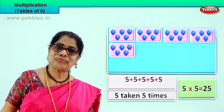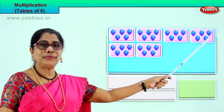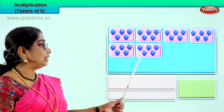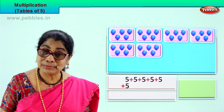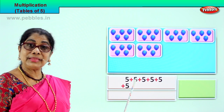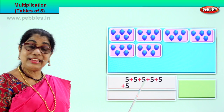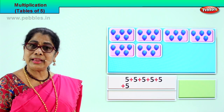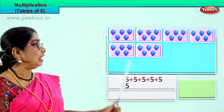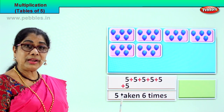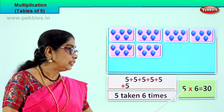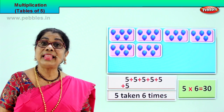Let's look at another grouping of five. One, two, three, four, five, six. Here you have five taken six times. Multiplication is repeated addition, so we add five six times. Five plus five is ten, plus five is fifteen, plus five is twenty, plus five is twenty-five, plus five is thirty. Five into six is equal to thirty. Five sixes are thirty. Good.